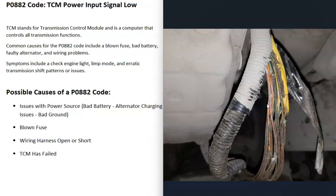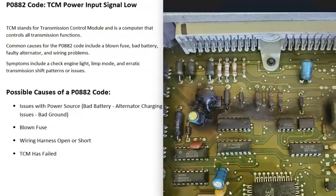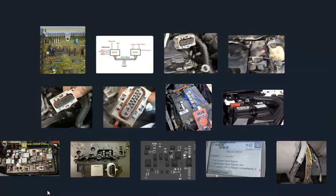Finally, the transmission control module itself may have failed and need to be replaced. TCMs can be located behind the glove box, in the engine bay, or even inside the transmission itself. Sometimes when they fail, you can see burnt components on the board — a burnt resistor or blown capacitor — though this doesn't always happen. If you smell a burnt smell near the TCM, it's possible the module has gone bad.